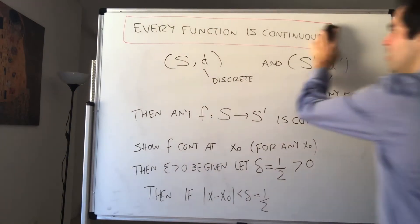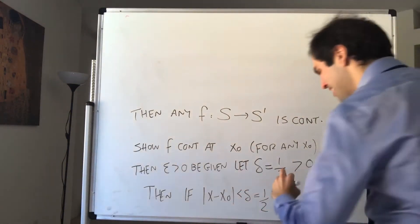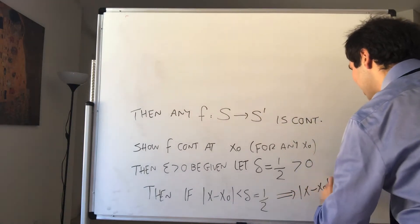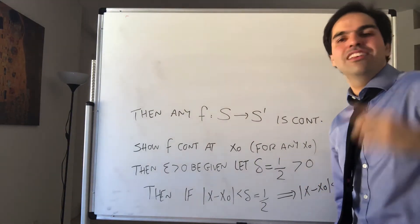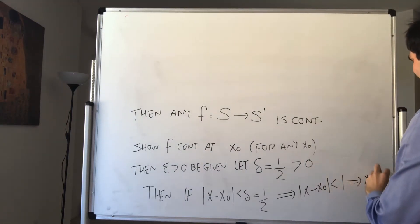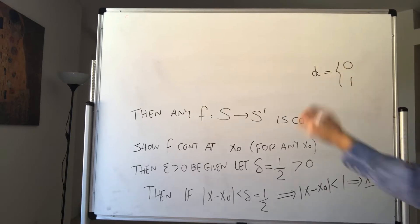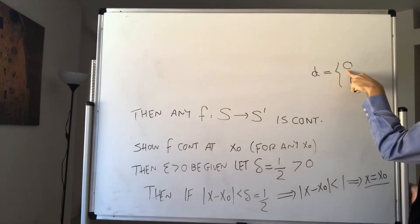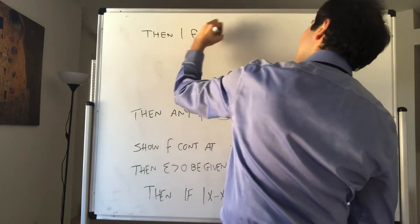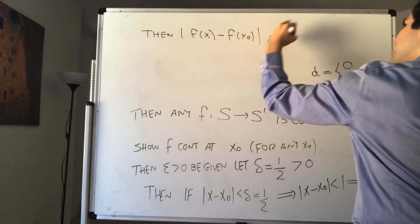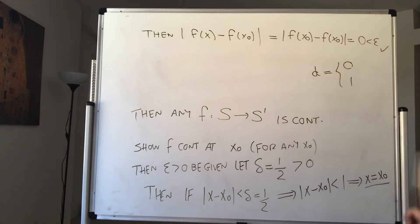Then for all x, if d(x, x₀) is less than delta, which is one-half, what does it mean for points to be less than one-half apart under the discrete metric? It means they can't be distance one apart, so this implies x equals x₀, because the discrete metric only takes values zero or one. But then d'(f(x), f(x₀)) is just d'(f(x₀), f(x₀)) which equals zero, and that is less than epsilon. So f is continuous.